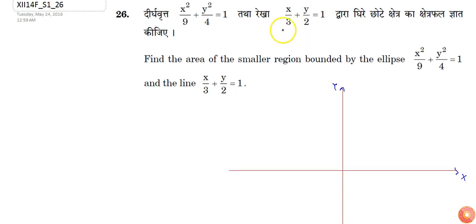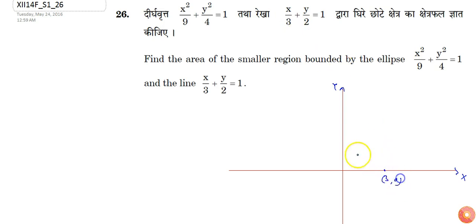The line is given as x by 3 plus y by 2 is equal to 1, which means the x-intercept is 3, so the point is (3, 0), and the y-intercept is 2. So the line will pass through both these points.